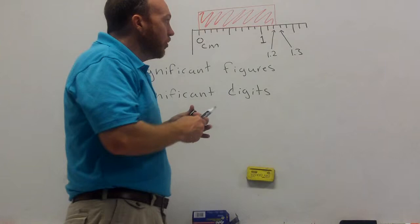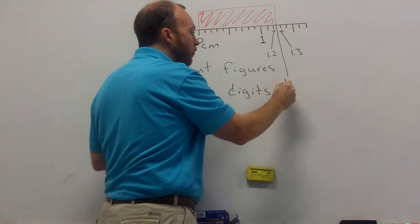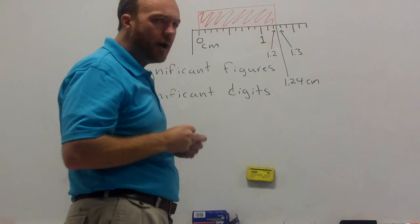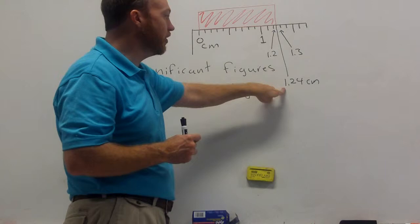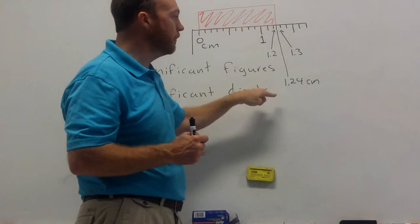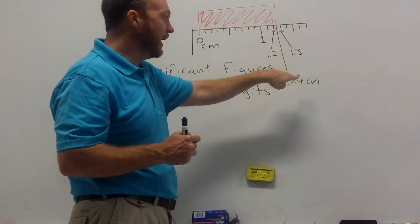So, I'm going to estimate this length. And I'm going to estimate this length as 1.24 centimeters. So, now I want to talk about the idea of significant digits and significant figures. When I read this, I know for sure that this is at least 1 centimeter long. I know this exactly. I can also tell for sure it's at least 1.2 but not 1.3. So, I know it's in between 1.2 and 1.3. I know it's 1.2 something. I know this exactly.